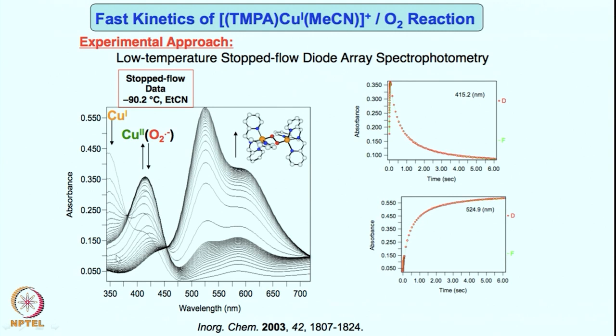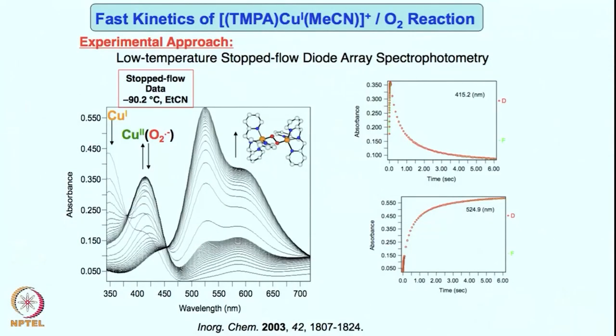A new intermediate appears all of a sudden when a very fast spectroscopic technique such as stop-flow kinetics with UV-visible spectra is used. This clearly indicates there is a transient intermediate. These intermediates are so unstable and so reactive there is no chance of seeing them at room temperature. All these low-temperature studies and fancy spectroscopic studies allow us to look into what is happening at a molecular level and at very fast timescales. Whether this first-formed intermediate is really a copper superoxo intermediate was not initially known.